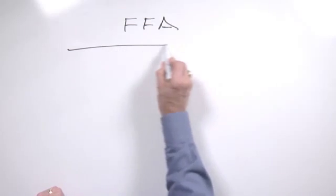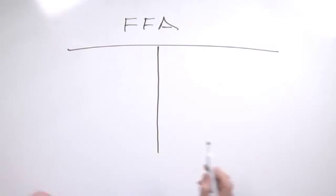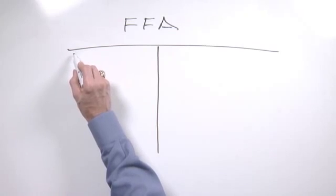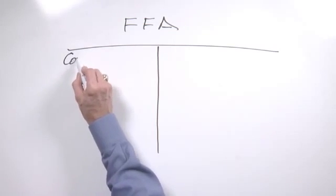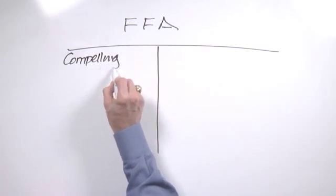Basically what you do is you draw a T on a flip chart page or two flip chart pages stuck together and on one side, on the left side, you put the forces that are compelling you forward.